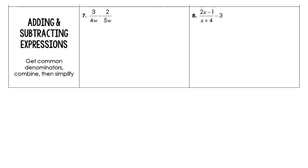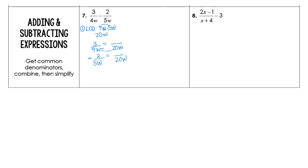Now we're ready to talk about adding and subtracting rational expressions. The first thing you need to do is get a least common denominator. You have 4w and 5w. That least common denominator: 4 times 5 gives you 20, and you're choosing the smallest exponent of w, so it's just 20w. Let's stack this like you did back in elementary school. So 3 over 4w equals what over 20w, and 2 over 5w equals what over 20w.